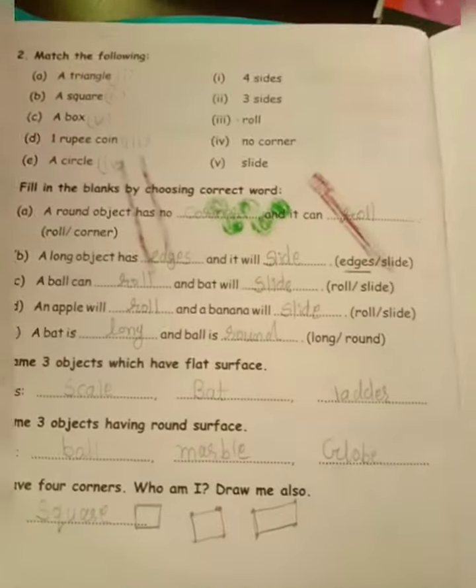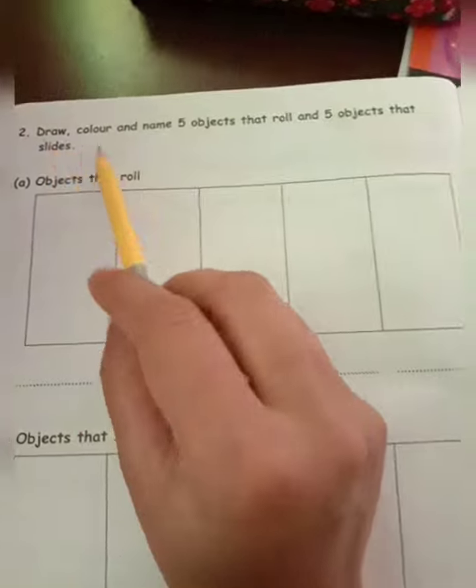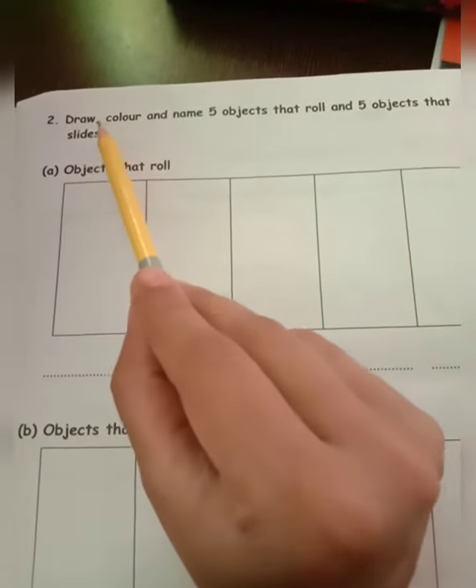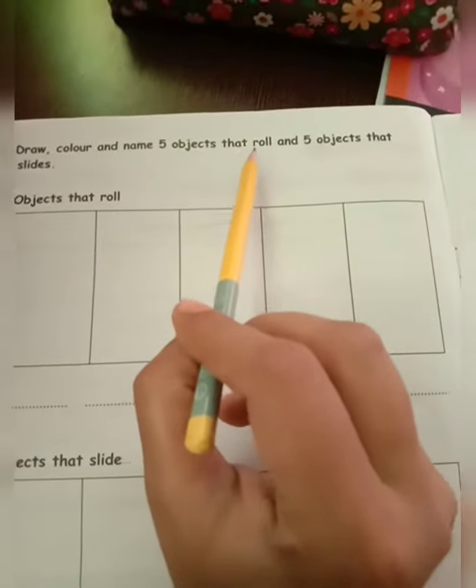As you know, we completed till page number five. Now we will complete the last page of our chapter one. Let's start. What is question number two? Draw, color, and name five objects that roll and five objects that slide.